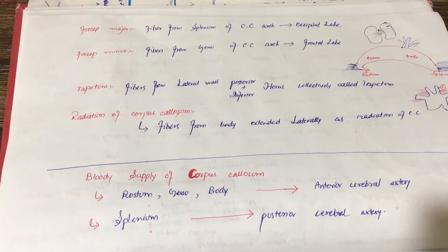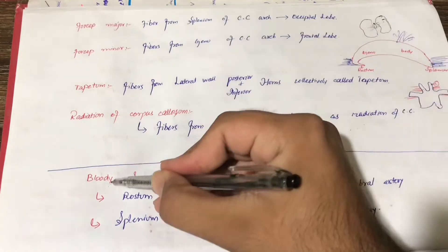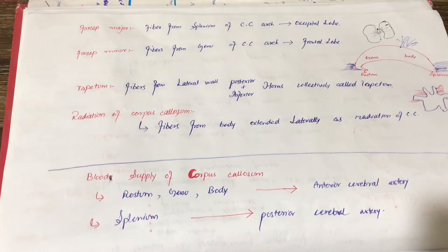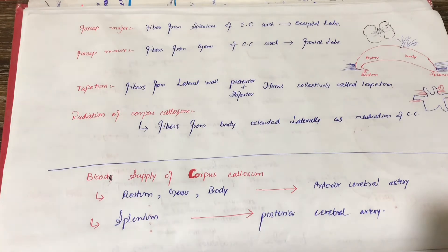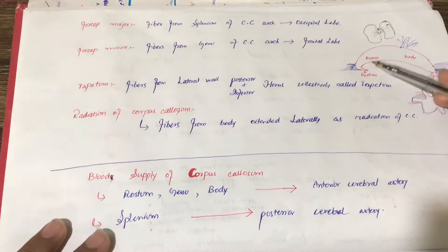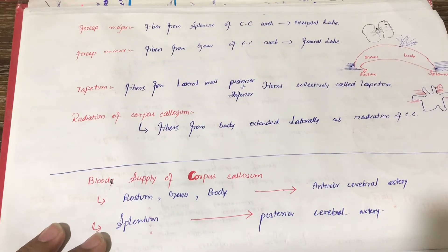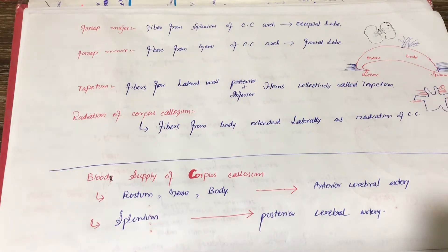The blood supply of the corpus callosum. Basically, you have to know the parts. The first one is rostrum, genu, body and then splenium. Now, the parts are the blood supply of the corpus callosum.